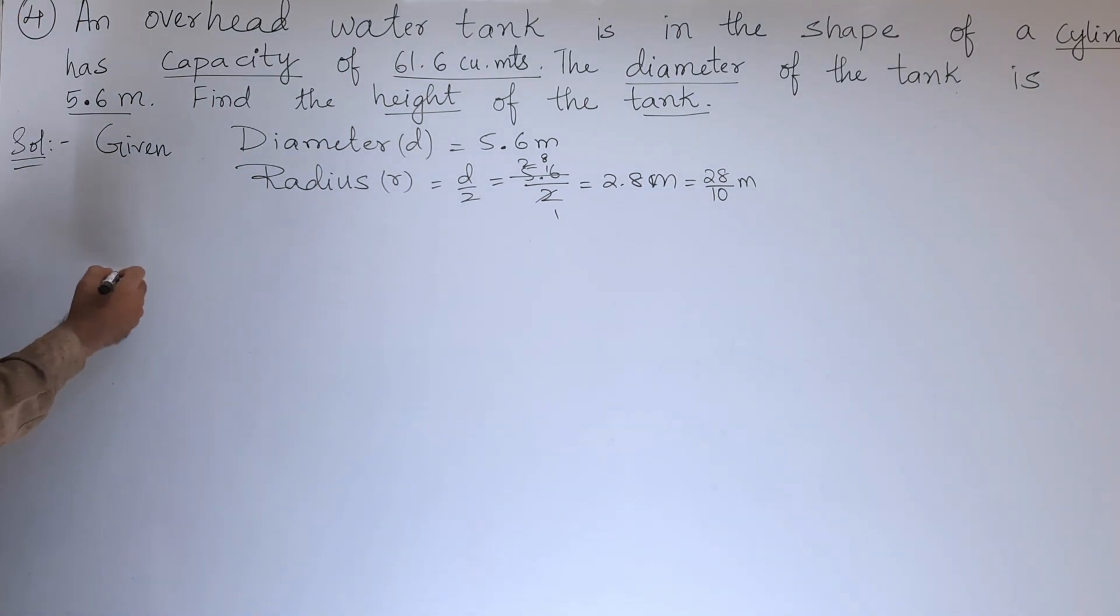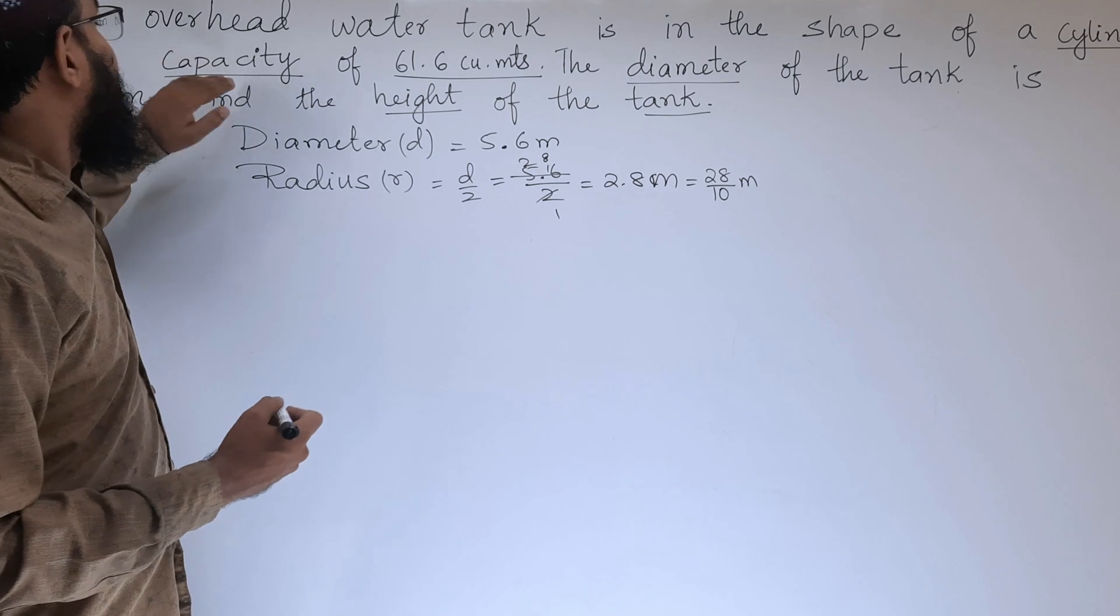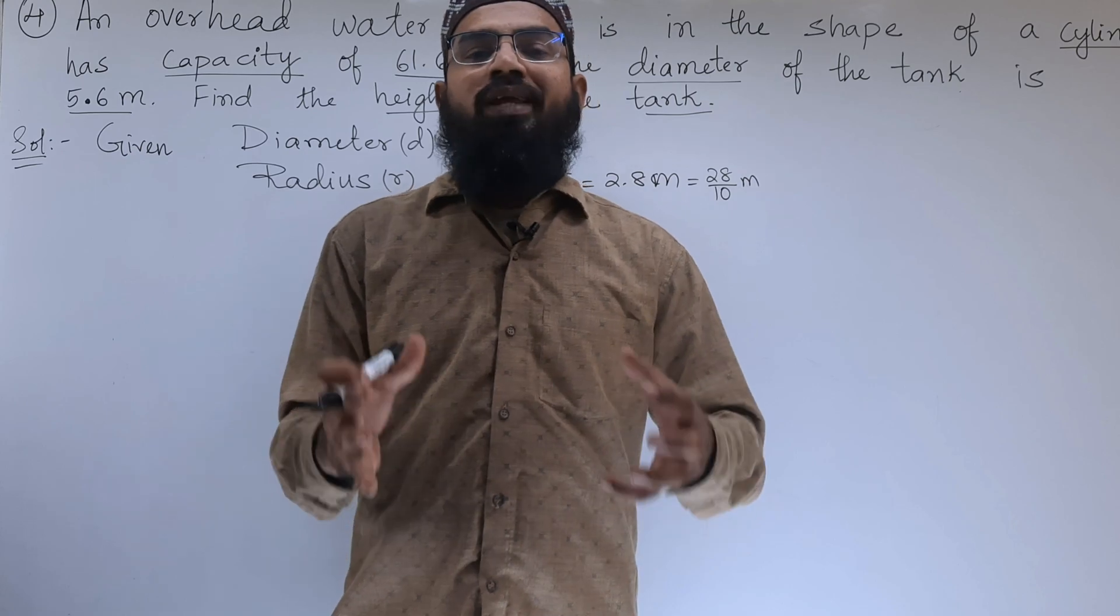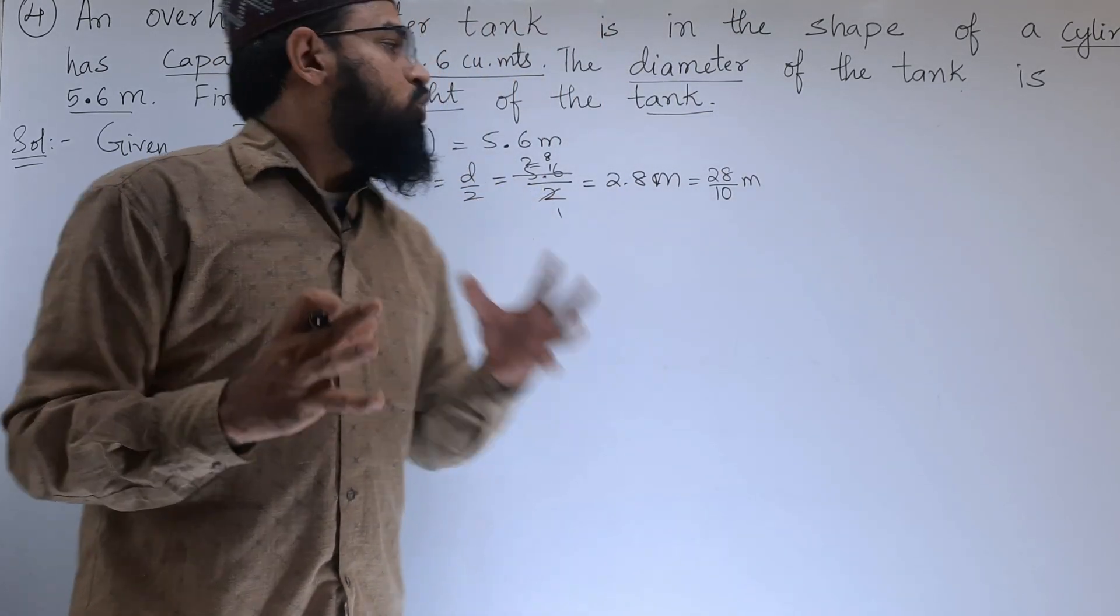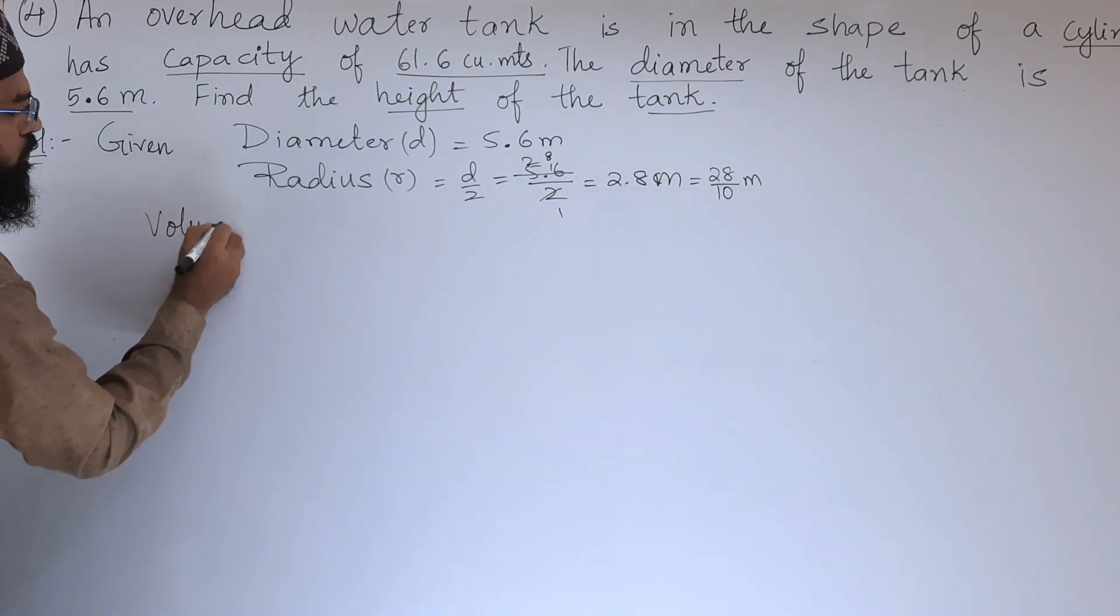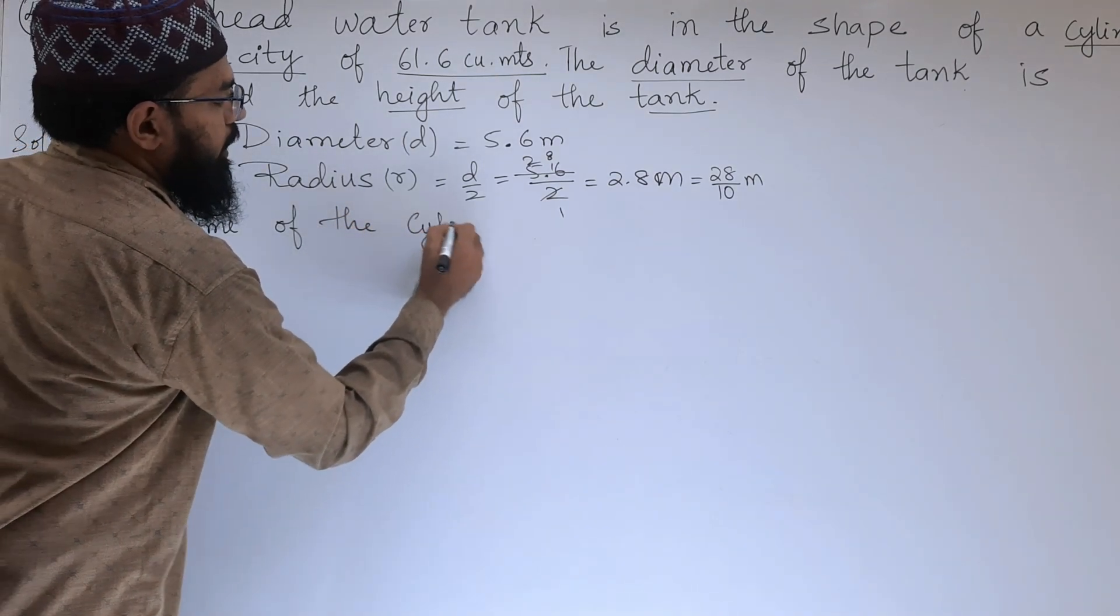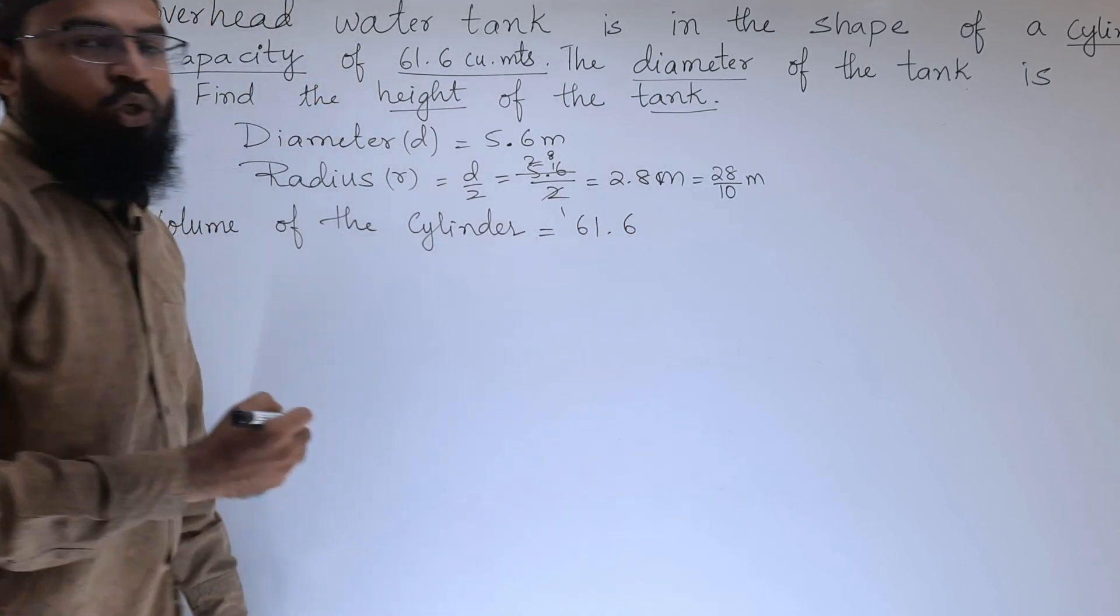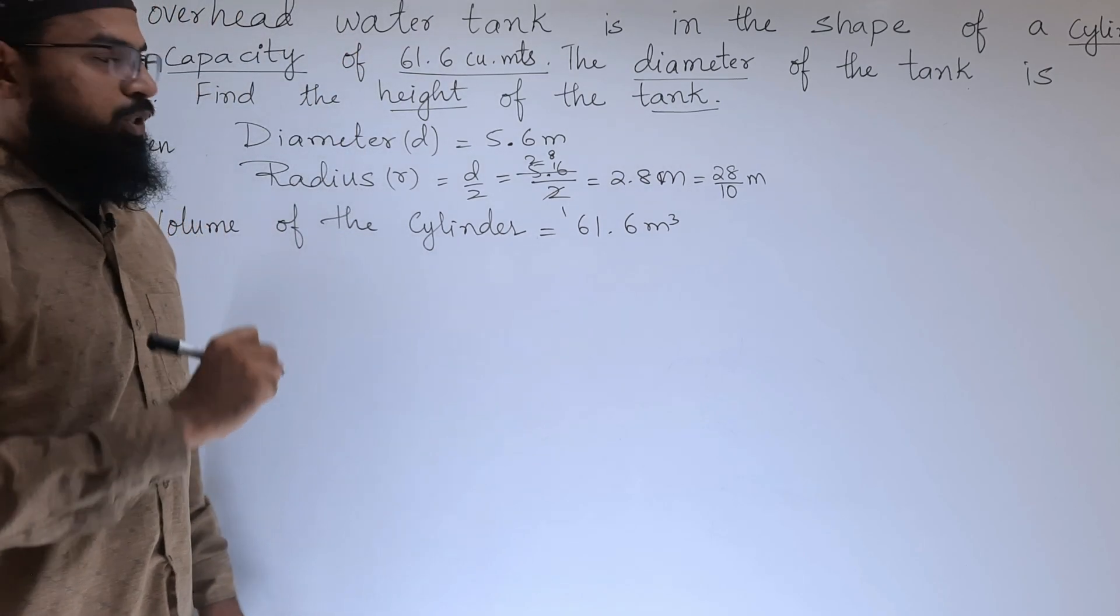Now, let us write the other point which is given, that is the capacity of the cylinder. Capacity means how much amount of liquid it is holding, that is nothing but the volume. So, volume of the cylinder is 61.6 cubic meters.